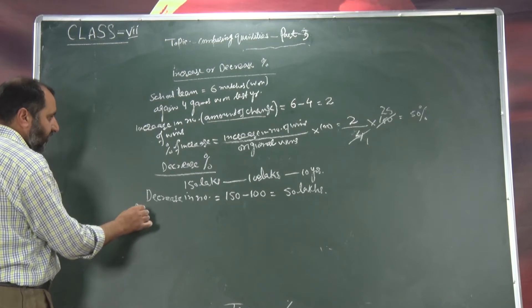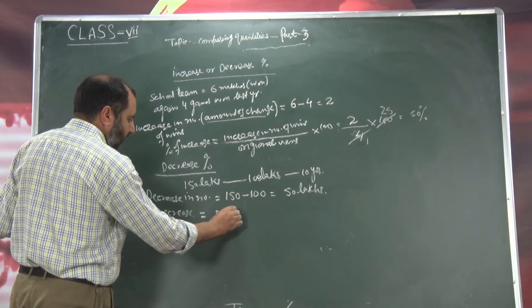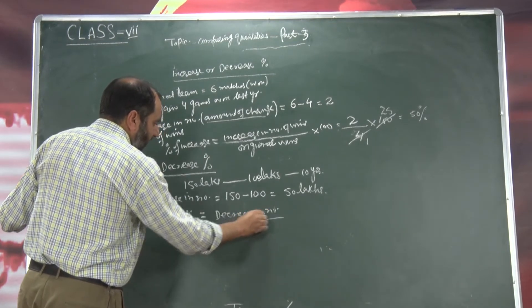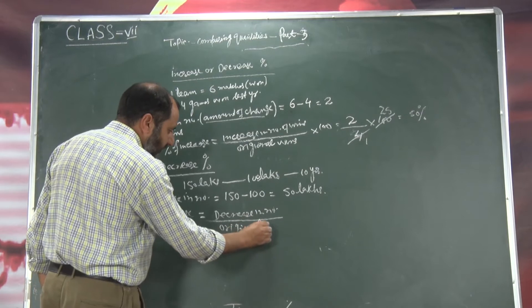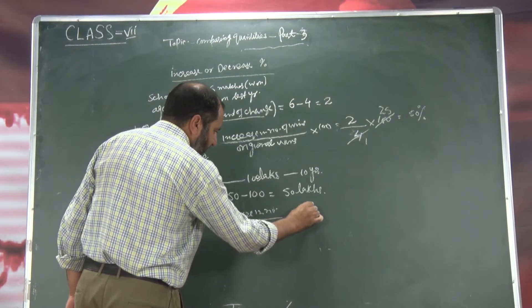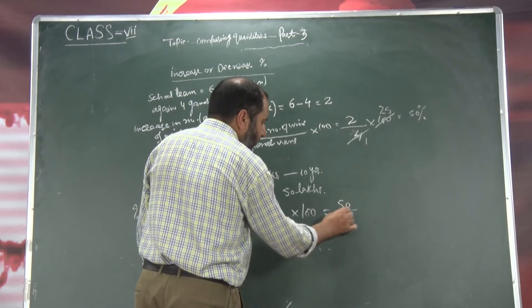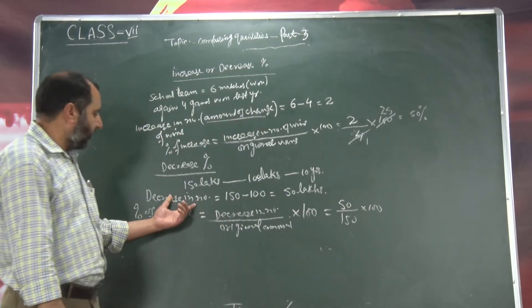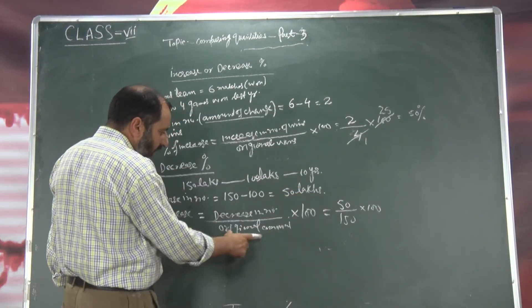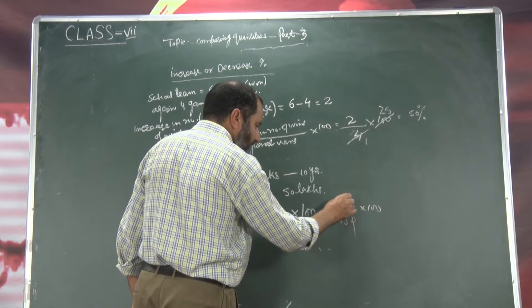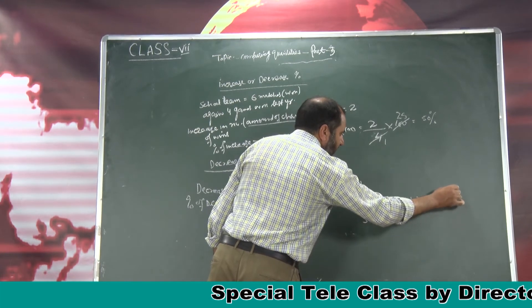To ab hum nikalingi percentage of decrease. Percentage of decrease means amount of change — decrease in number divided by original amount, into 100. Decrease in number hua 50. Original hai 150 — into 100. 0 and 0 gets cancelled. 5 ones are 5, 5 threes are 15 — which is equal to 100 divided by 3. 100 divided by 3 means 33 plus one divided by three percent.